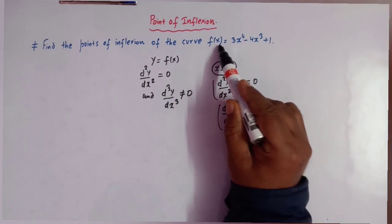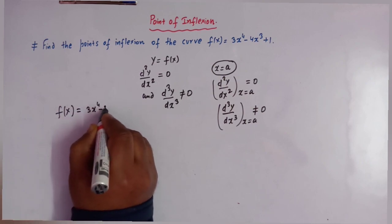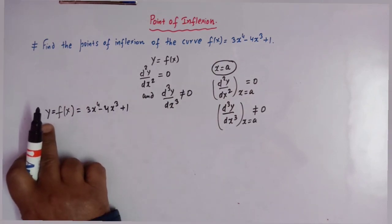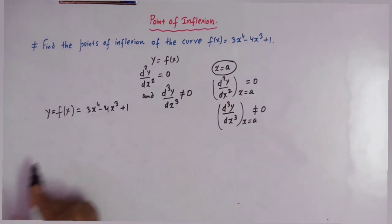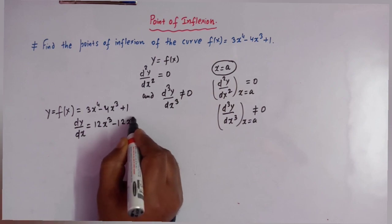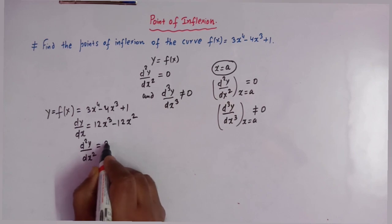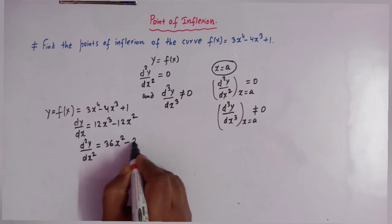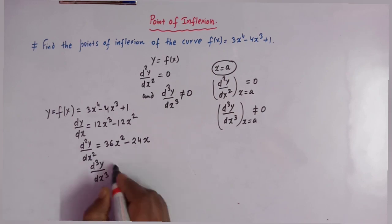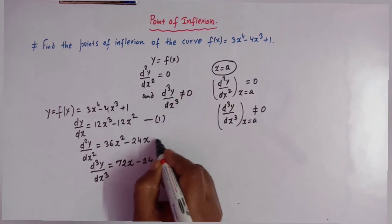We are given f(x) = 3x⁴ - 4x³ + 1. Let us take it as y = f(x) and find the derivatives. The first derivative dy/dx = 12x³ - 12x². The second derivative d²y/dx² = 36x² - 24x. The third derivative d³y/dx³ = 72x - 24.